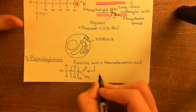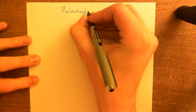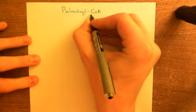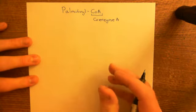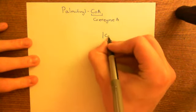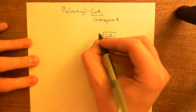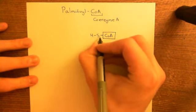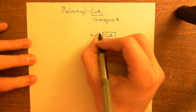It's not palmitic acid itself used in S-palmitoylation — instead you use palmitoyl coenzyme A, often abbreviated palmitoyl-CoA. This is the same coenzyme A seen in respiratory pathways. We won't draw the full structure of coenzyme A; we'll abbreviate it to a box labelled CoA. The important functional group of coenzyme A is that it has a thiol group coming off it.